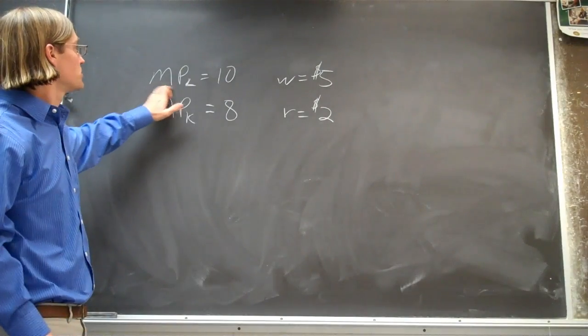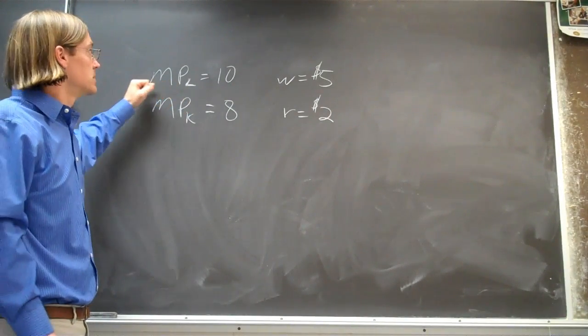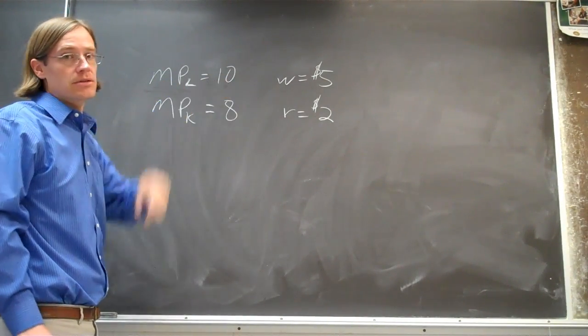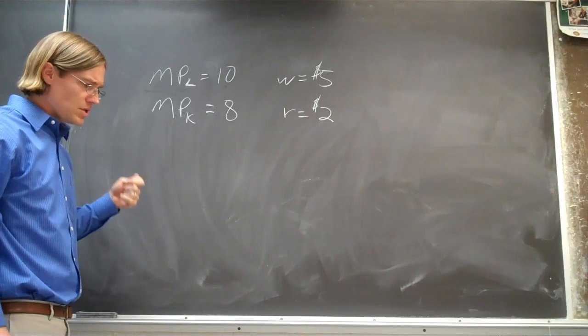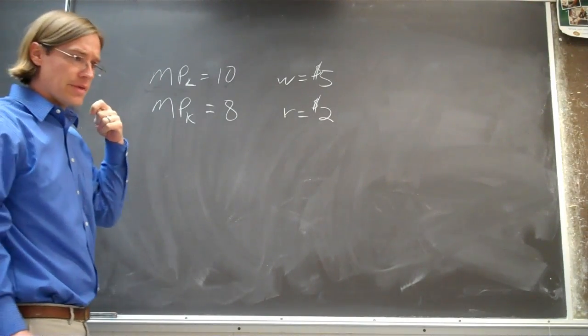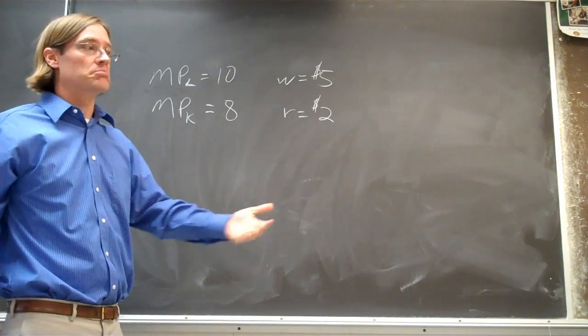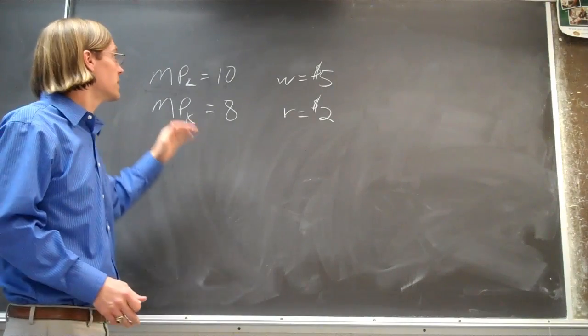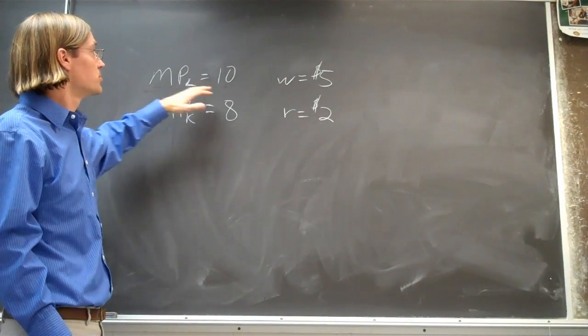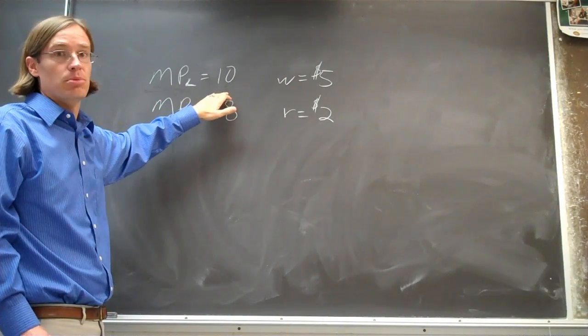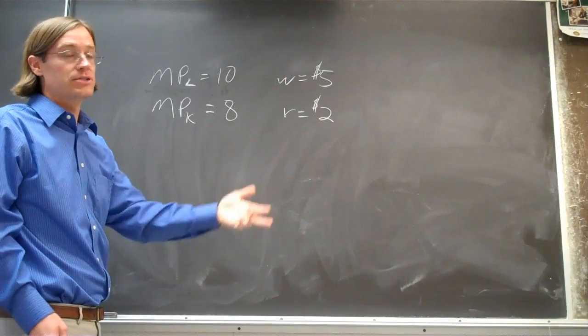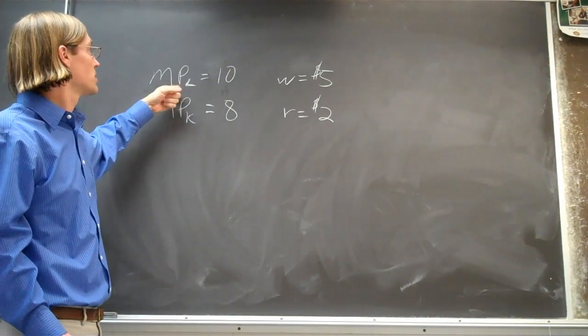We've got the marginal product of labor in this example is 10. So that means that whenever you use that one more unit of labor, hire one more worker, that worker is going to produce 10 units of output. That's the additional output, the marginal product of labor.